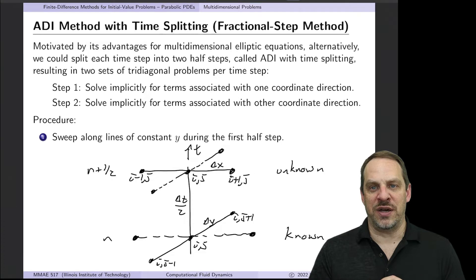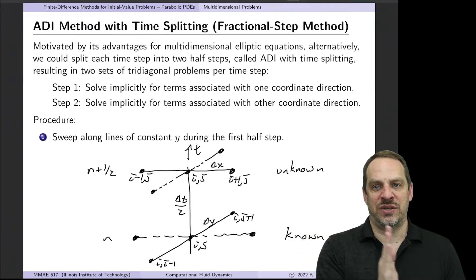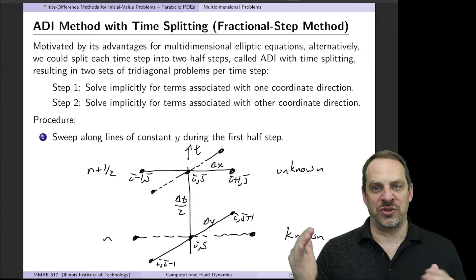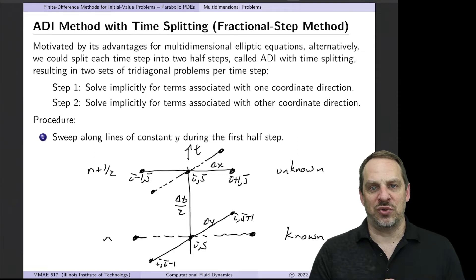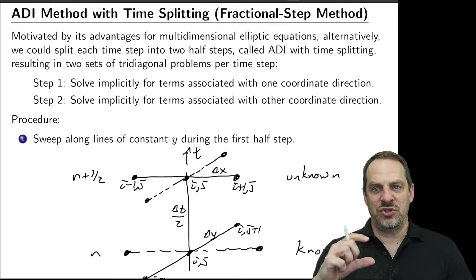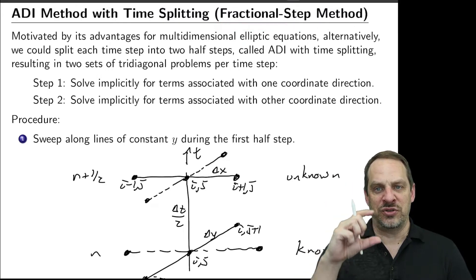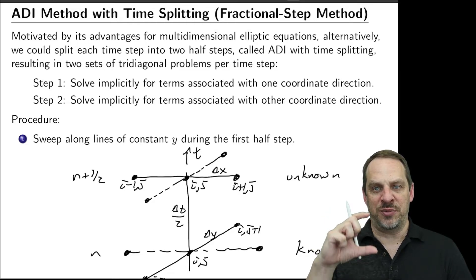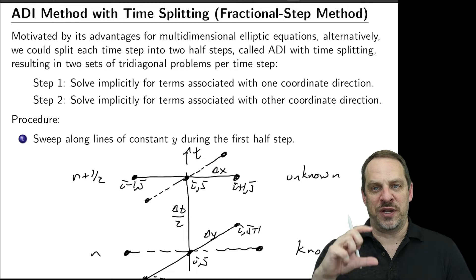So that brings us to the ADI method. Remember, the ADI method in elliptic equations, alternating direction implicit method, was a technique for taking constant y-lines, taking constant x-lines, where each of which was just a tridiagonal system to solve for each line. So we're doing a whole bunch of Thomas calls to get the solution for the y-lines and the x-lines. So can we adapt that approach now to a parabolic setting with marching in time? So that leads to the ADI method with time splitting, or more commonly called the fractional step method. So as implied by the term fractional step method, we're going to take each time step and we're going to divide it up into fractional steps. If we have two dimensions, we'll divide it up into two steps. If we have three dimensions, we would divide it up into three steps.